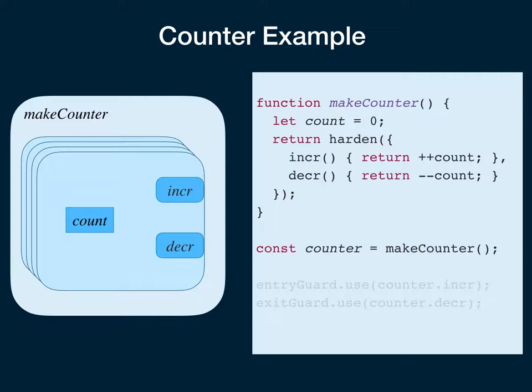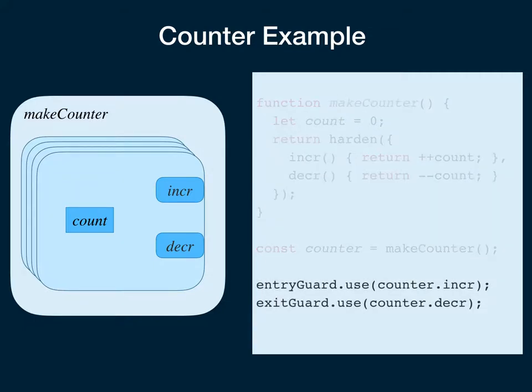The thing that you can do with a counter like this is give the increment function to an entry guard and the decrement function to an exit guard, so that the entry guard can count those entering a chamber and the exit guard can count those exiting. The count then represents those still in the chamber.